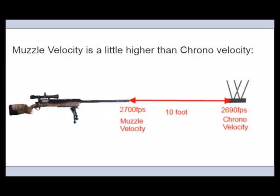Chronodistance. If you measure your velocity 10 foot from the muzzle it'll be slightly less than the velocity at the muzzle but the app can work it out for you.